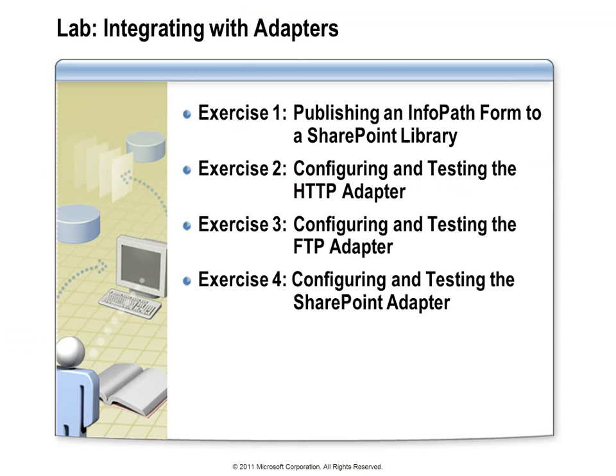In this lab, you'll start by publishing an InfoPath form to a SharePoint library — the data is in XML format underneath, opening within an InfoPath form that provides a nice user interface to read and update the document. Once that's set up, you'll have a chance to configure the HTTP and FTP adapters. Finally, you'll end the lab by configuring the SharePoint adapter to send messages to the SharePoint library.